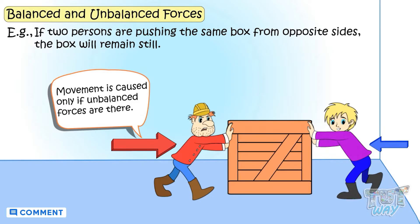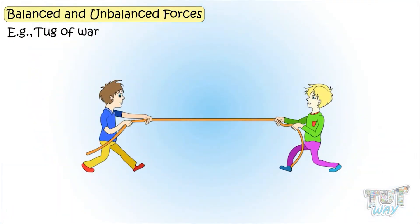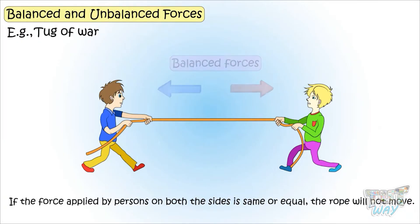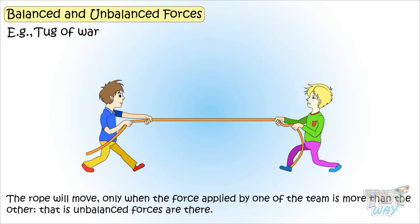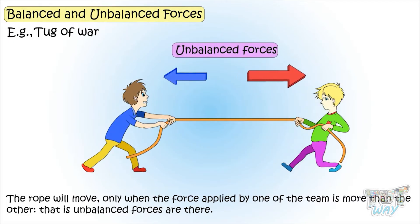Here is another example. In case of tug of war, if the force applied by persons on both sides is the same or equal, the rope will not move. The rope will move only when the force is applied more by one side of the team than the other. That means unbalanced forces are there.